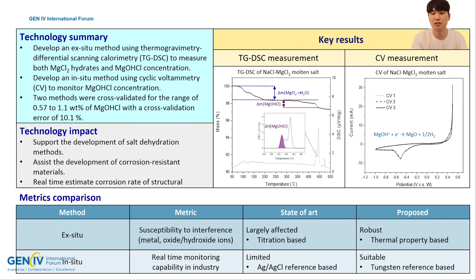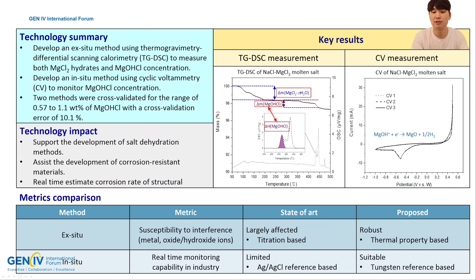To achieve this, we developed an ex-situ method using TGDSC and an in-situ method using cyclic voltammetry. The molten salt used in this study was a sodium chloride and magnesium chloride binary mixture. For TGDSC analysis, based on the observed mass loss, the concentration of magnesium chloride hydrate and magnesium hydroxychloride could be determined respectively. Especially, to quantify low concentrations of magnesium hydroxychloride, we utilized the relationship between the enthalpy required for thermal decomposition of magnesium hydroxychloride and its corresponding mass loss.